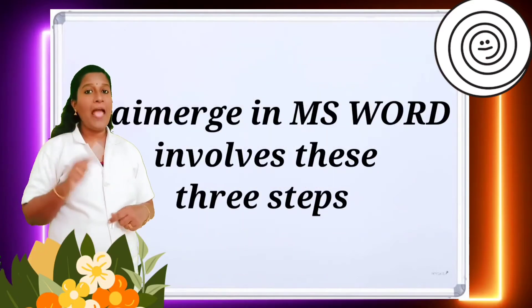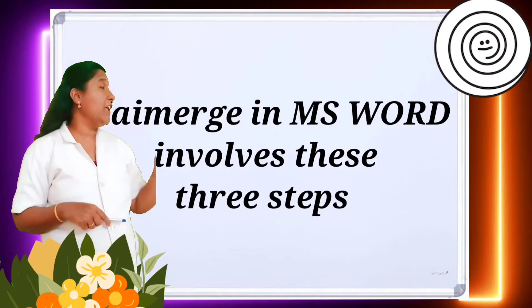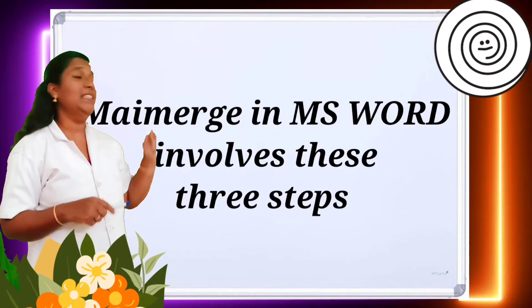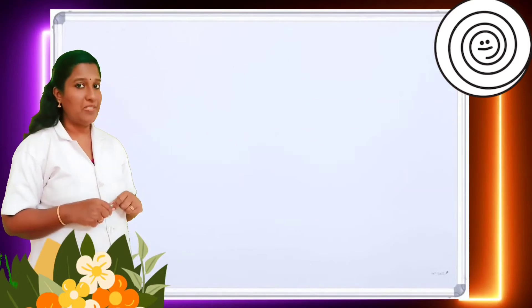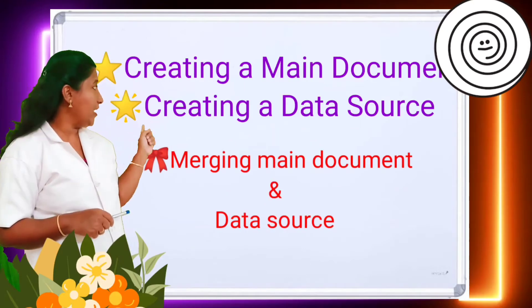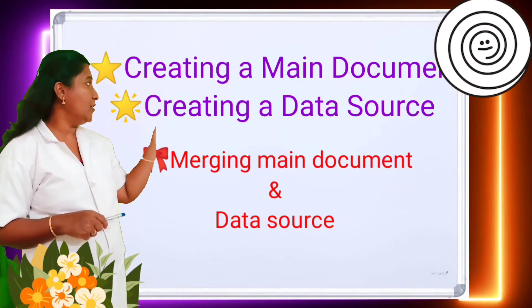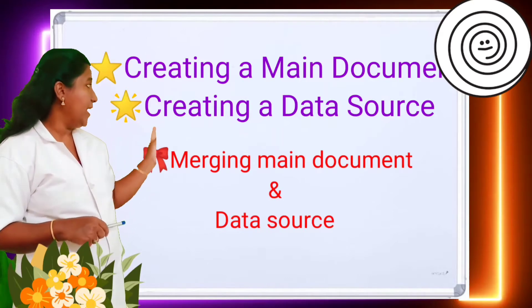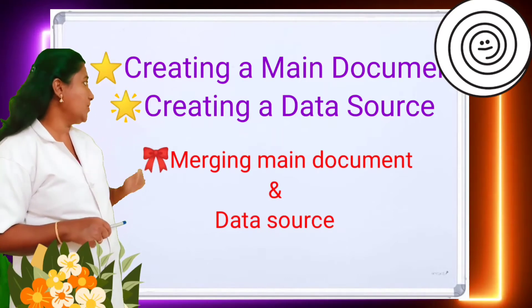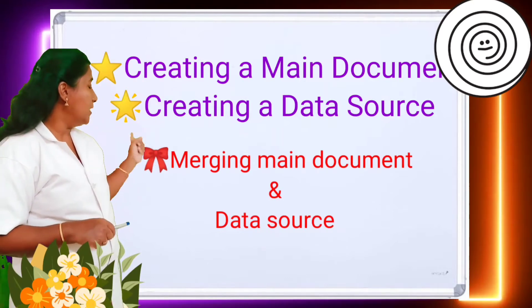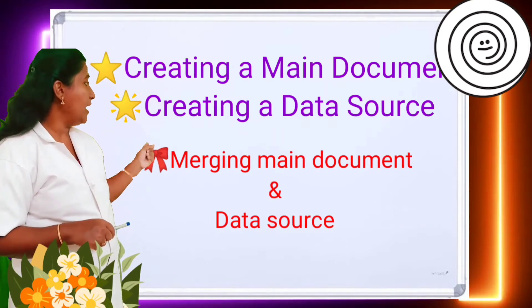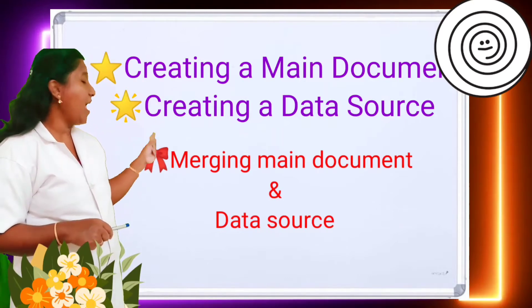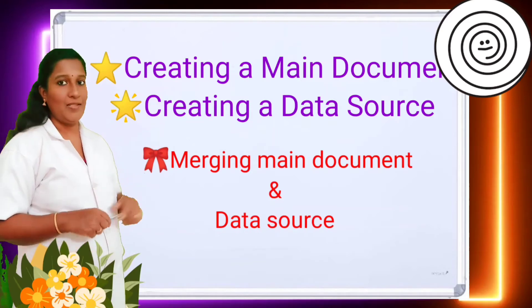Mail merge in MS Word involves three steps: creating the main document, creating the data source, and merging the main document with the data source.